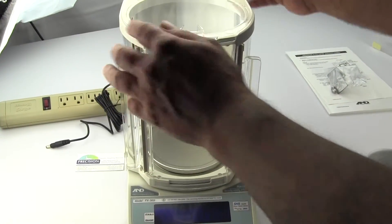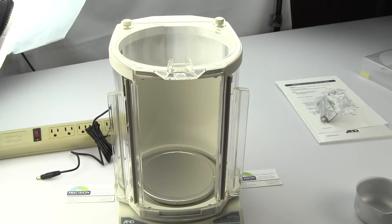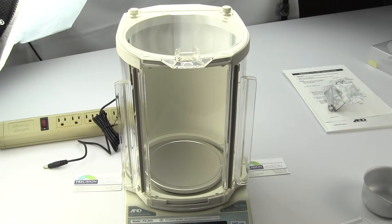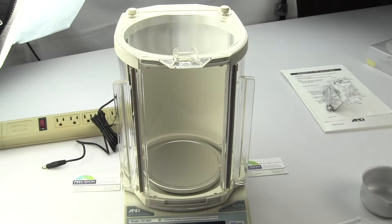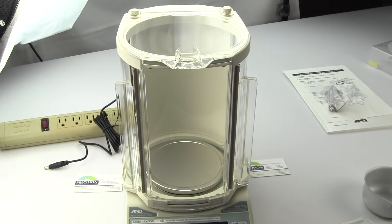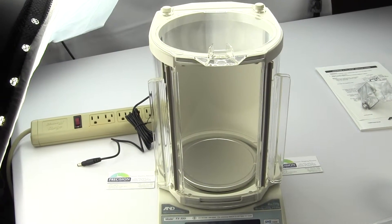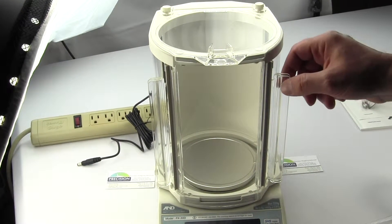This is the taller draft shield and A&D's part number for it is FXI-11. They describe it as the large breeze break and it's 7.9 inches high.